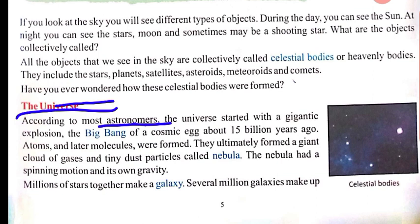The universe started with a gigantic explosion — the Big Bang — of a cosmic egg, about 15 billion years ago. Yeh jo hamara universe hai, Brahmand, iska shuruaat ek gigantic yaani bahut hi vishal dhamaake ke saath hui thi, jise Big Bang — Maha Visfot — kaha jaata hai. Esa maana jaata hai ki hamare poore Brahmand mein jitni bhi sun, moon, stars, planets, satellites, asteroids, meteorites — yeh sab ek cosmic egg ke roop mein ek saath the. Aur lagbhag 15 billion years ago, ek vishal explosion hua, jisse yeh sab cheezein scatter ho gayin, phel gayin.